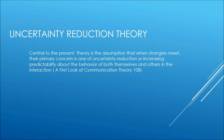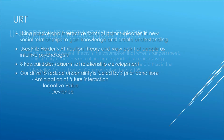Central to the theory is the assumption that when strangers meet, their primary concern is one of uncertainty reduction, or increasing predictability about the behavior of both themselves and others in the interaction, using passive and interactive forms of communication and new social relationships to gain knowledge and create understanding.